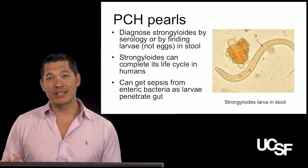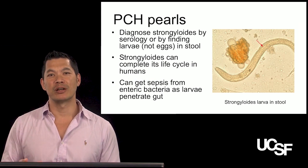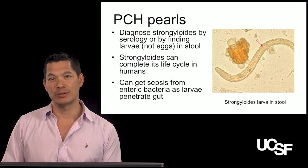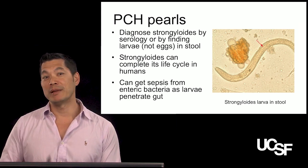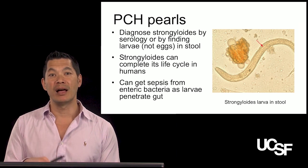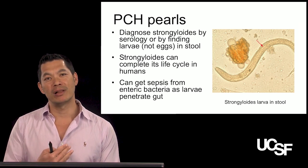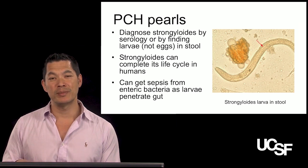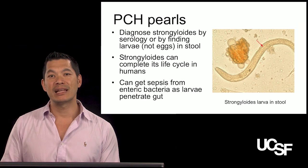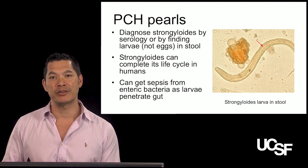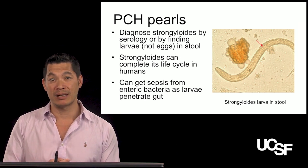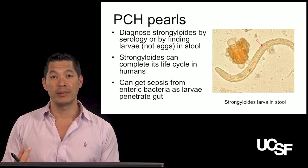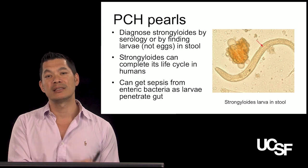The key pearls for this section: you diagnose strongyloides by serology or by finding larvae — not eggs — in the stool. In pinworm we looked for eggs, but in strongyloides we look for larvae because larvae are where all the action occurs. Strongyloides can complete its life cycle in humans, and you can get sepsis from enteric bacteria as the larvae penetrate the gut, poking holes and allowing gut bacteria to move into the bloodstream.